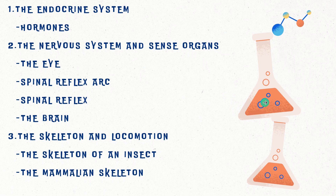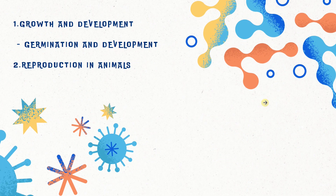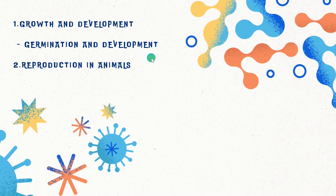Additional high-probability topics include growth and development — specifically germination and development — and reproduction in animals. These are the topics with a high probability of appearing in this year's Biology Paper 2 exam, so you have to go through them.